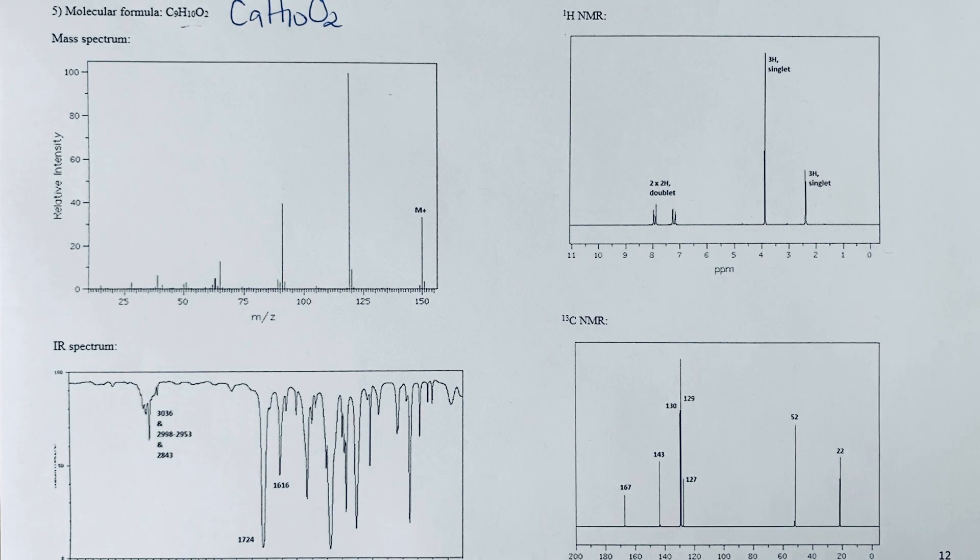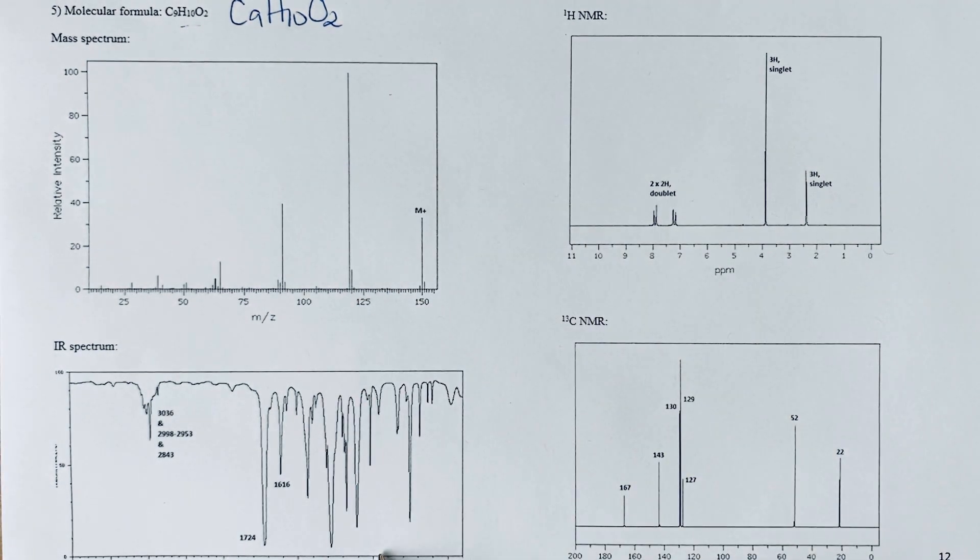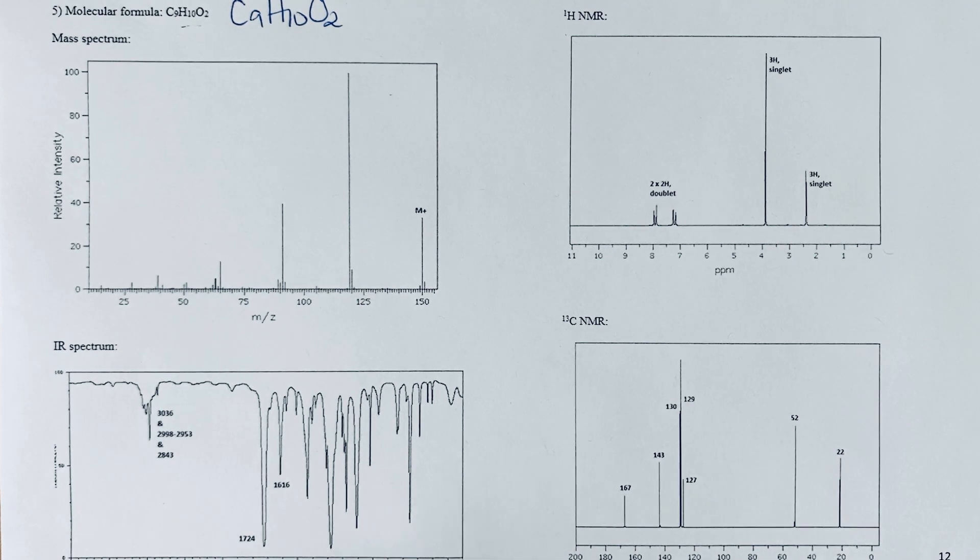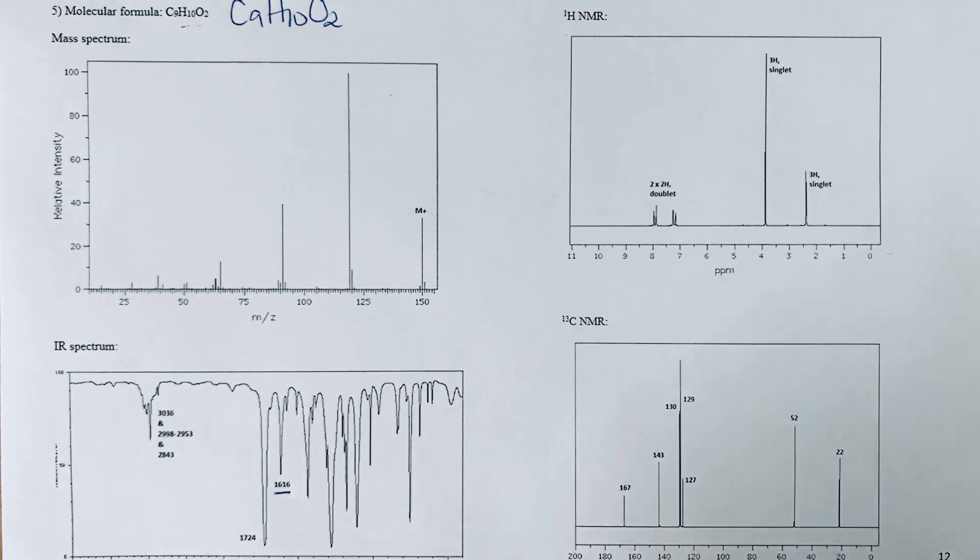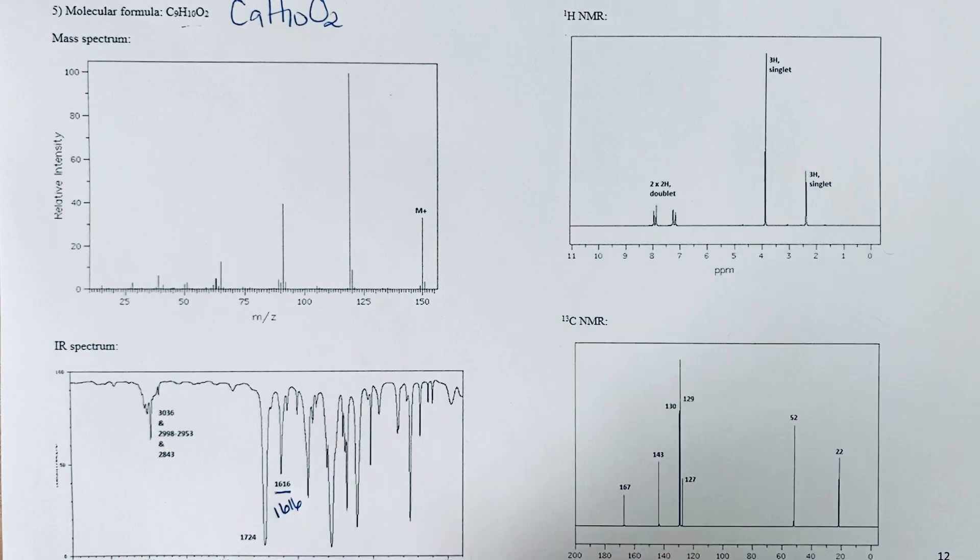That would immediately have me thinking of the possibility of an aromatic ring. Let's take a look at the IR and get an idea of some of these functional groups. If I'm thinking aromatic ring, I might see evidence of that ring stretch and also the sp2 carbon-hydrogens. I'm looking for that sharp ring stretch and I'm seeing it here at 1616 for a benzene ring.